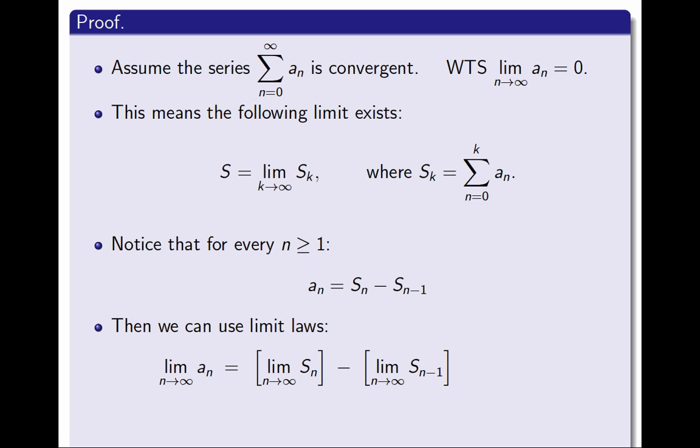But to be able to do this, I need to know that those two limits existed. So to be able to use the limit law here, I need to start by assuming that the series is convergent. In other words, the limit of the sequence of partial sums exists. And those two limits now exist, and they happen to be equal. And therefore S minus S is equal to 0, and that completes the proof. That's it.